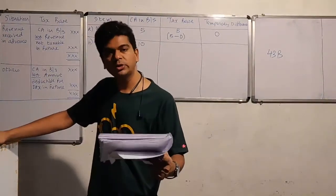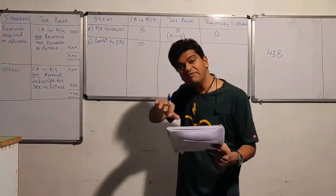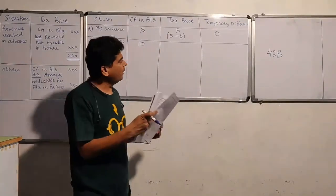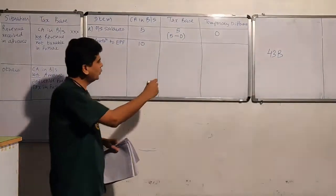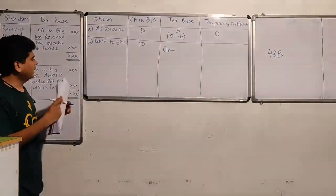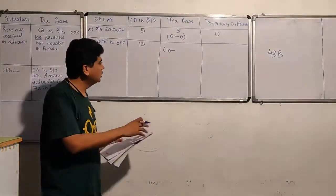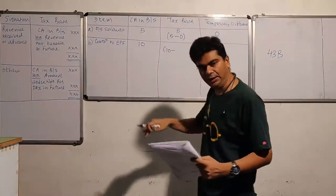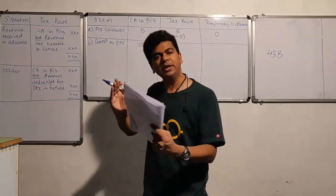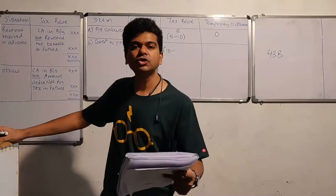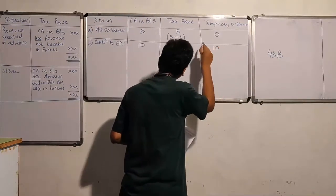The employer's PF contribution is shown in books on accrual basis, but deduction is available only when paid. It falls in the other category: carrying amount in the balance sheet is ten lakhs, less amount deductible for tax in future — the entire ten lakhs will be deducted when paid in a future assessment year. So the tax base is zero and the temporary difference is ten.